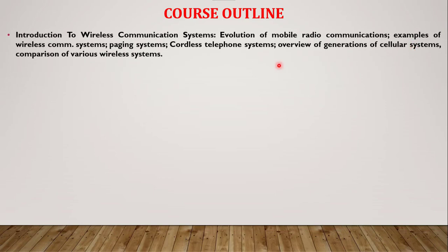We will start this course with the introduction to wireless communication systems and then we will study briefly about the evolution of mobile radio communication systems. We will study about paging systems, cellular systems, and then we will present an overview of different generations like 1G, 2G, 3G up to 5G, and we will present a brief comparison of these generations in our introductory lectures.